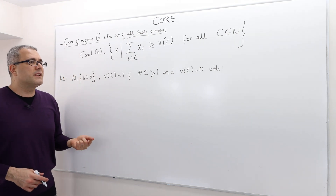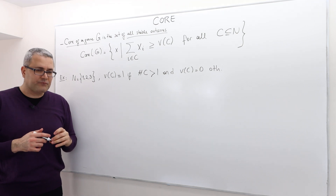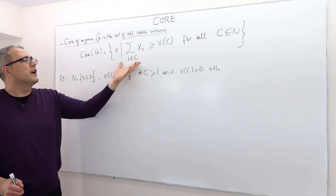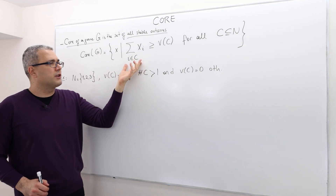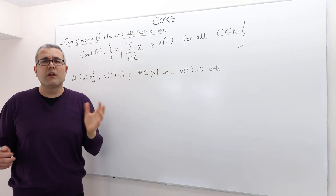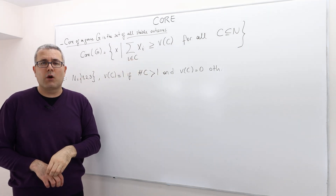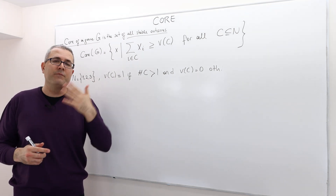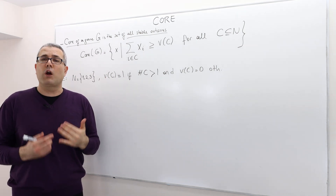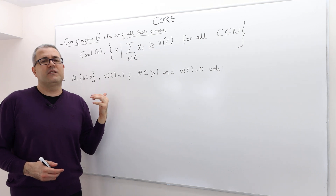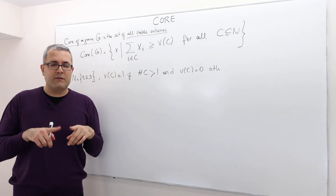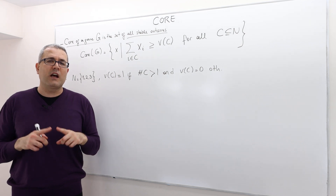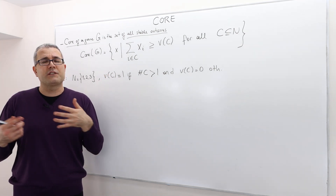As we discussed, core or stable outcomes are payoff vectors where no coalition has incentive to deviate. If the payoff vector gives some coalition less than what that coalition is worth on its own, then that payoff vector is not going to be stable, because that coalition has incentive to deviate and leave the grand coalition to form their own coalition. Stability is very similar to the concept of Nash equilibrium, but this time deviations are not done by individuals only — coalitions can also deviate.